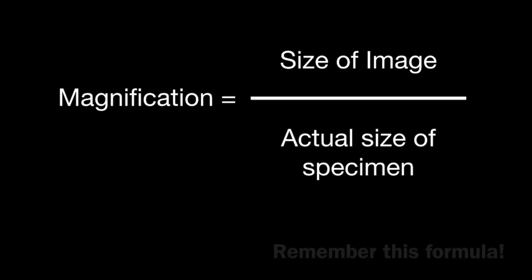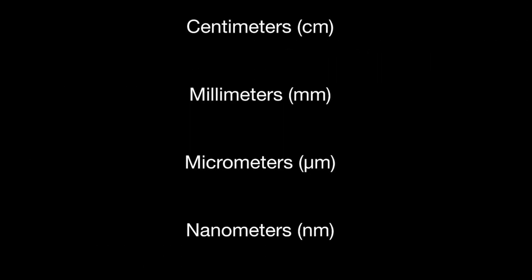To carry out this calculation successfully, you need to be familiar with the different units used in science for measuring length. Your ruler likely has centimeters and millimeters, but your specimen is going to be very small — likely measured in micrometers or nanometers — so you also need to be able to convert between these units.